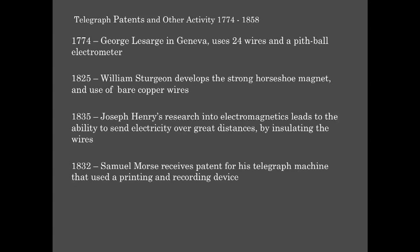The variations of inventions of the telegraph were many, with dials to indicate the letters to piano keys to tap them out. In 1774, George Lesarge in Geneva used 24 wires and a pithball electrometer. In 1825, William Sturgeon developed the strong horseshoe magnet and the use of bare copper wires. Then in 1835, Joseph Henry's research into electromagnetics led to the ability to send electricity over great distances by insulating those copper wires.